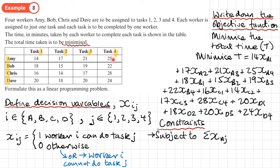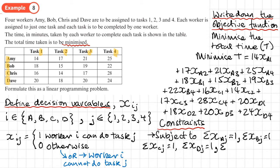We can use shorthand summation notation: the sum of all allocation values in row A equals 1, row B equals 1, row C equals 1, and row D equals 1. The same applies column-wise — each task can only be allocated to one worker, so the sum of each column also equals 1: task 1 sum = 1, task 2 sum = 1, task 3 sum = 1, and task 4 sum = 1.